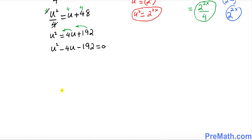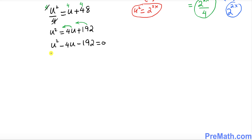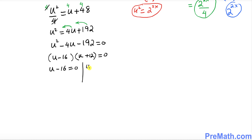This is a quadratic equation in u, so we can factor it. The factors are (u − 16)(u + 12) = 0. Setting each factor to zero: u − 16 = 0 gives u = 16, and u + 12 = 0 gives u = −12.